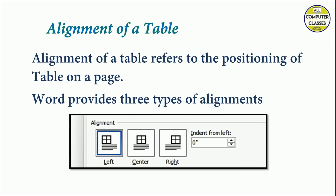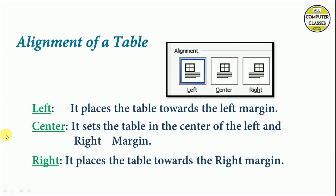The first topic is alignment of a table. It refers to the positioning of the table on a page. When we open MS Word, it provides us three ways to align our table on a page: left, center, and right.